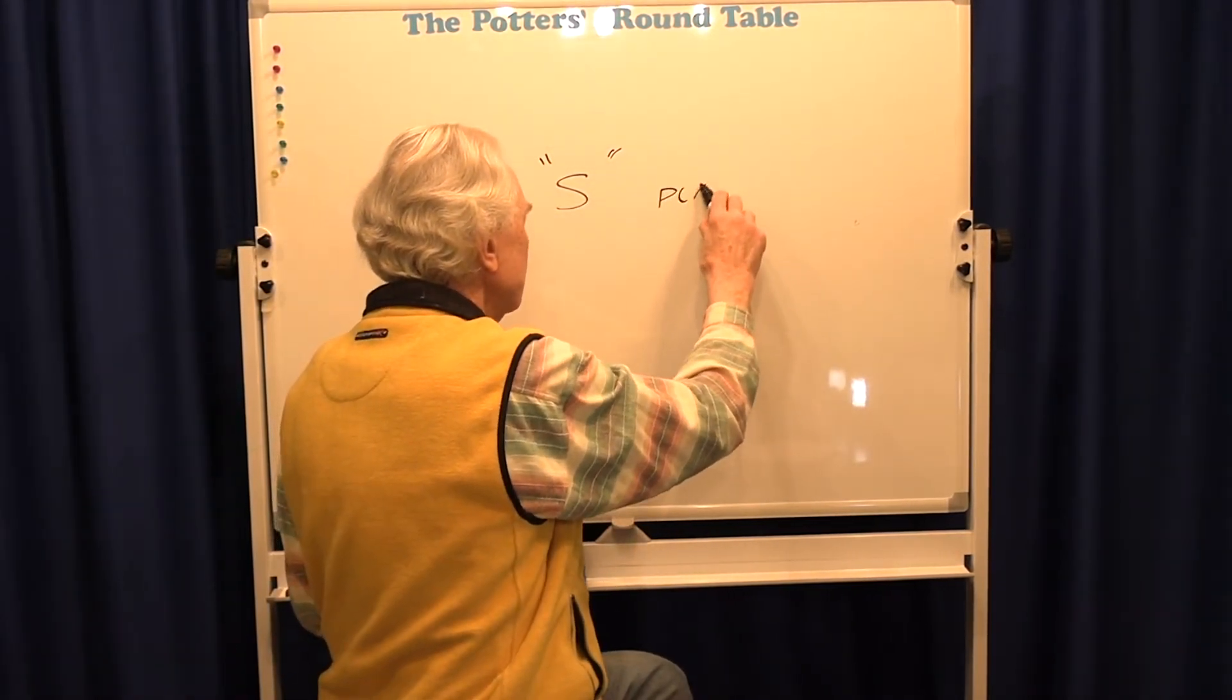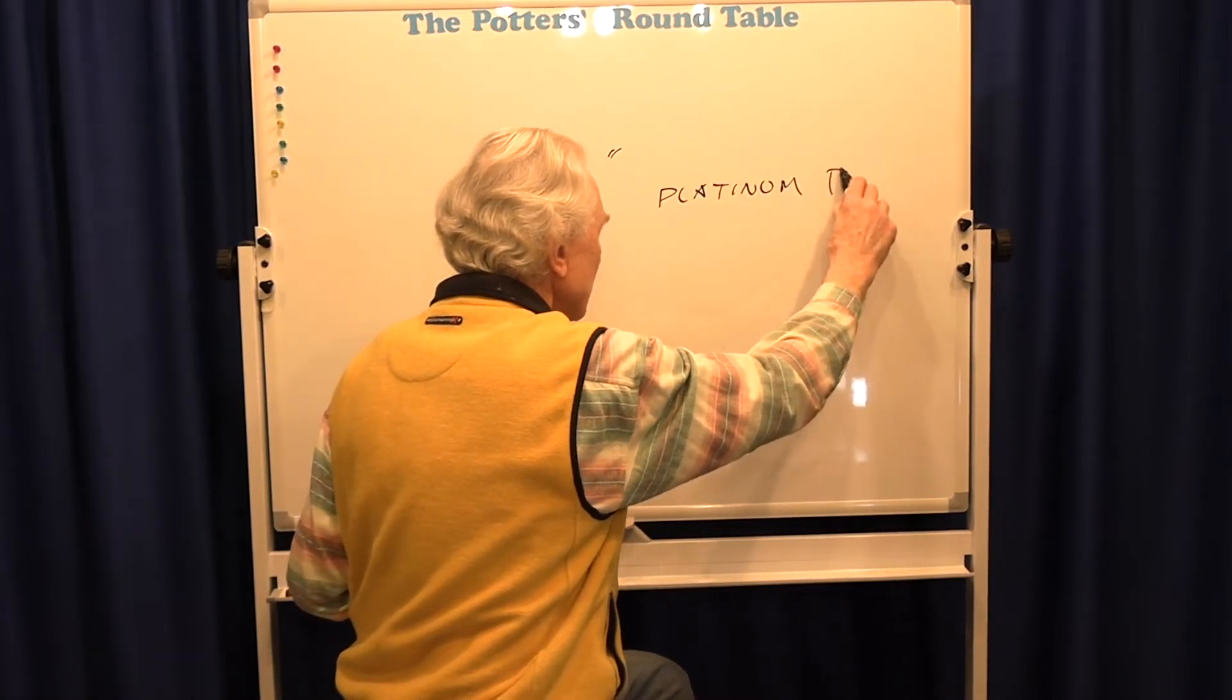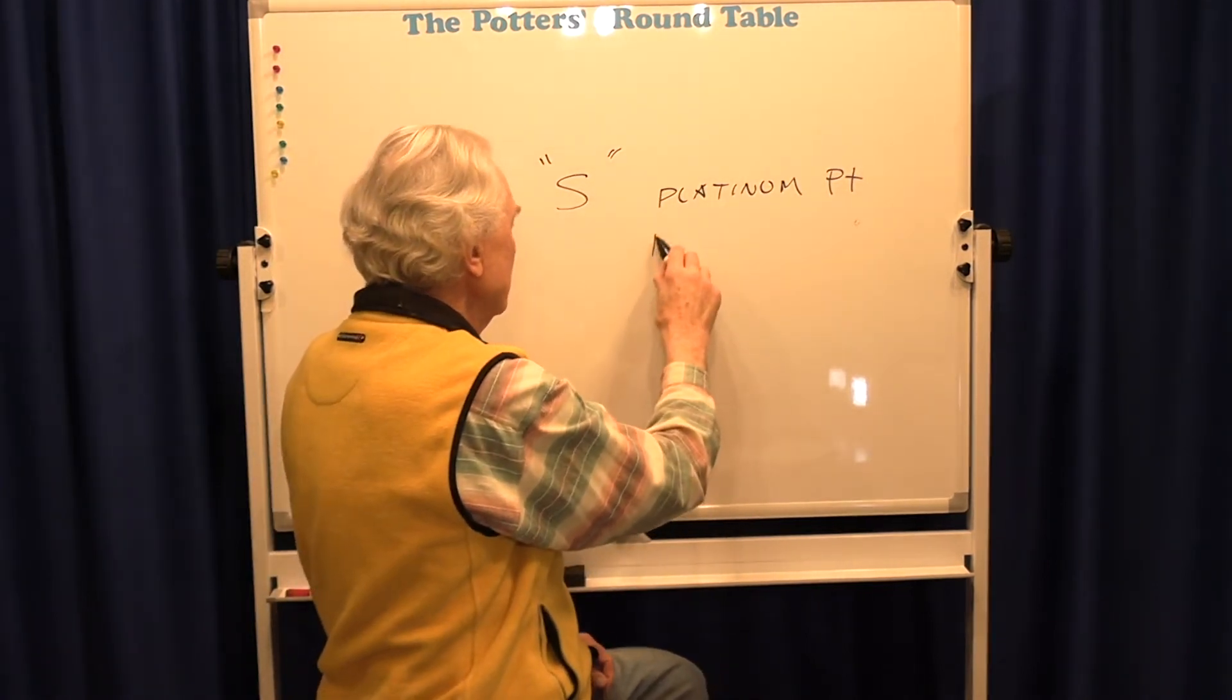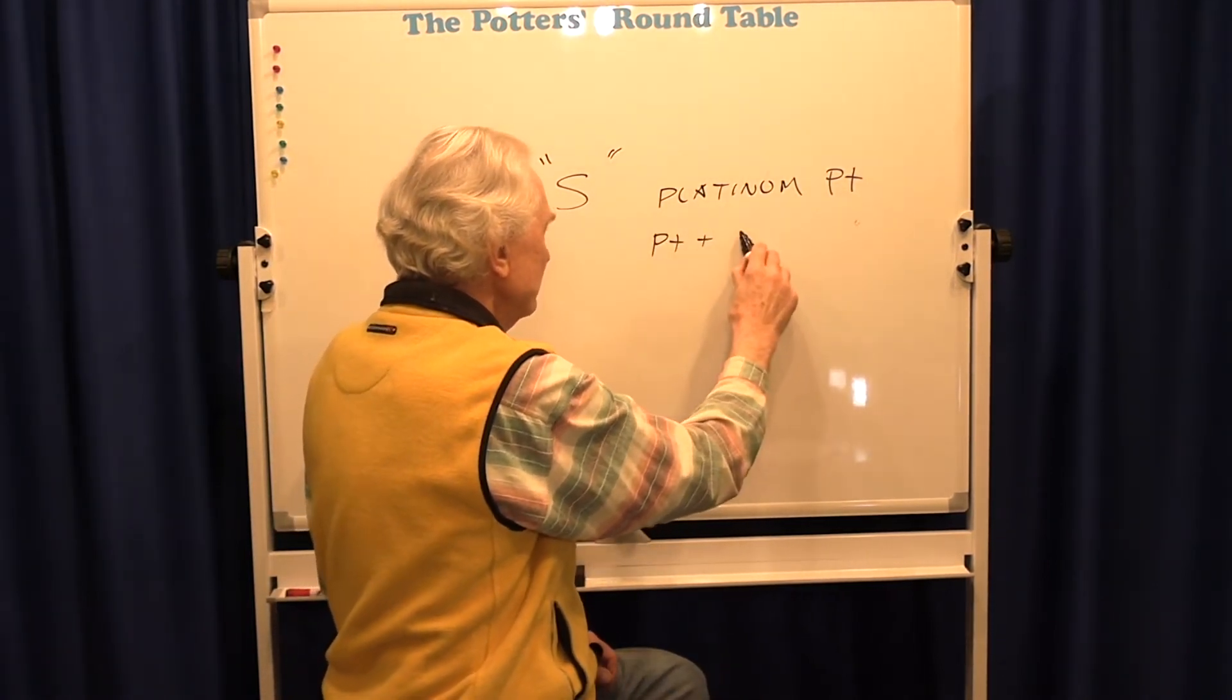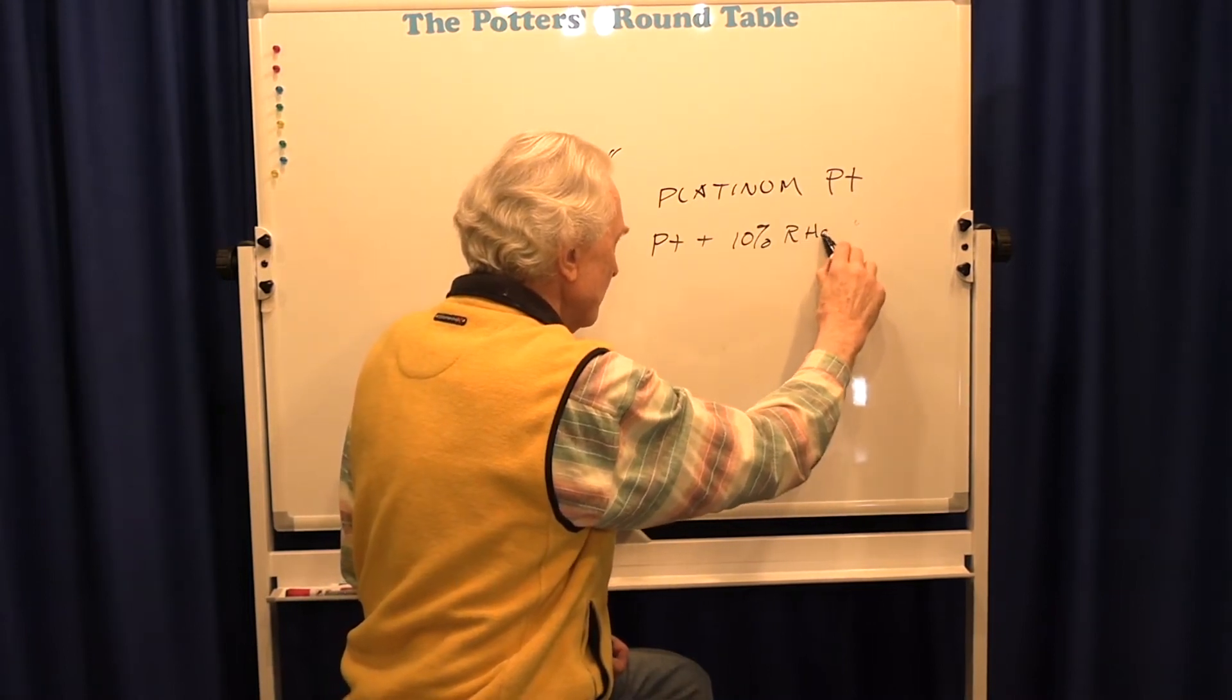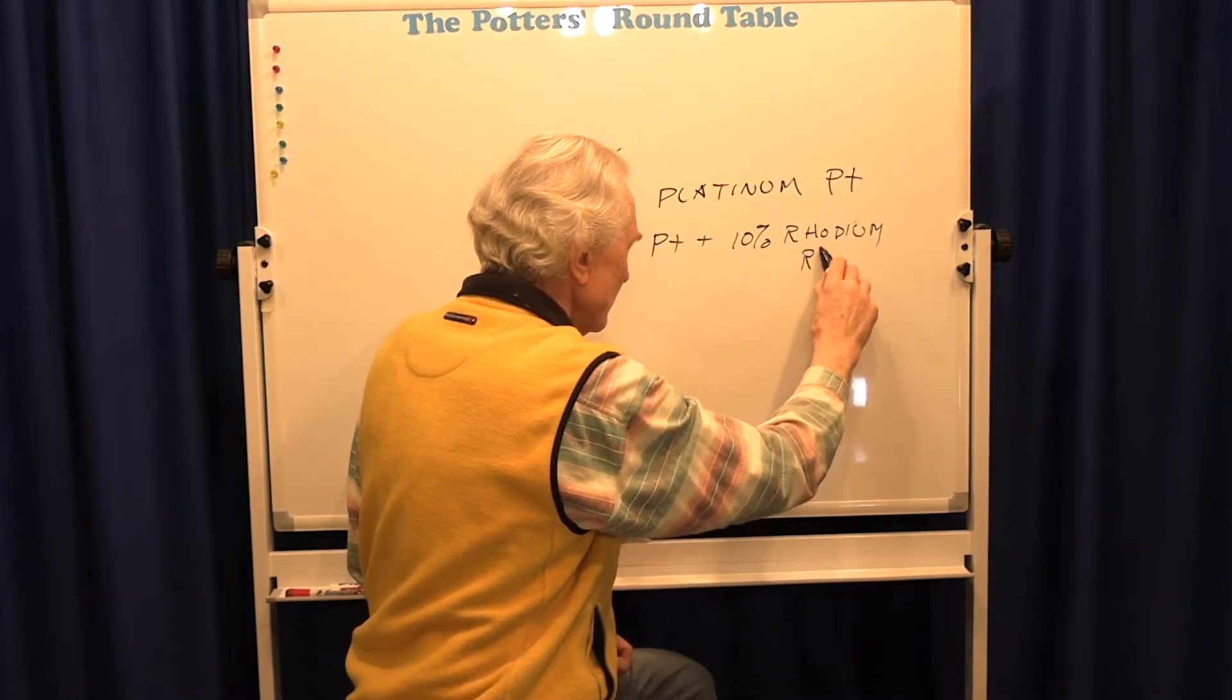A type S, the wires are platinum, which is just Pt, and then the second wire is an alloy of platinum plus 10% rhodium. That's another precious metal, rhodium.